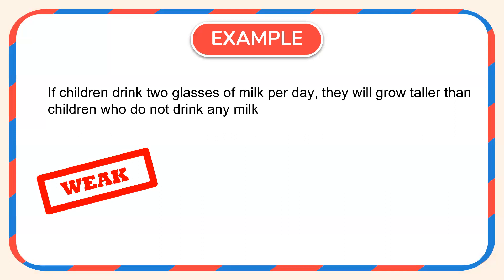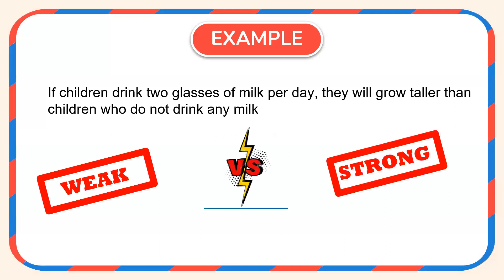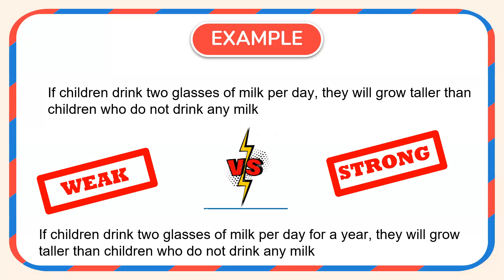If I have to refine this hypothesis and make it a strong hypothesis, I will write it in this manner: 'If children drink two glasses of milk per day for a year, they will grow taller than children who do not drink any milk.' By specifying the time period, it will help me to carry on with the investigation, to measure and test my hypothesis. This is an example of a strong hypothesis.